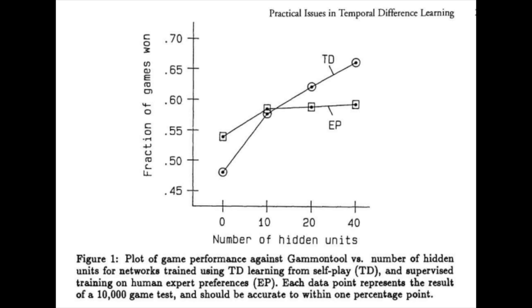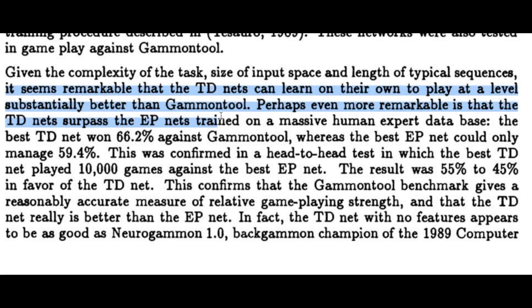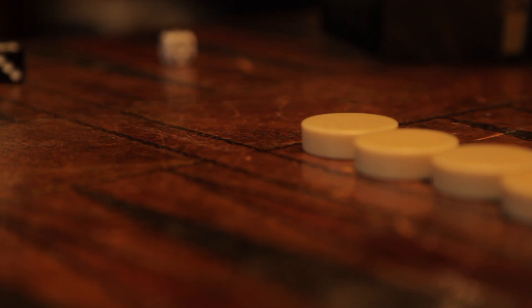After playing around 300,000 games against itself, it started to play better than human. He writes, "It seems remarkable that the neural networks can learn on their own how to play at a level substantially better than a computer system designed by the best experts."